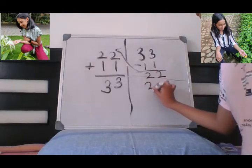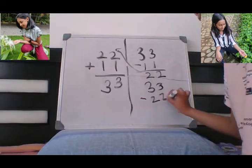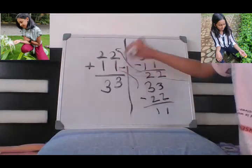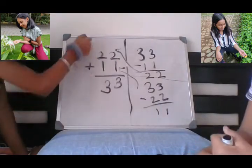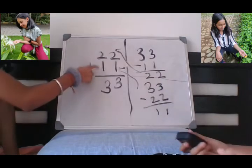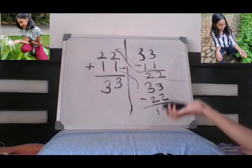Or you could do this one like 33 minus 22, which is going to be 11, and it comes over here. So you can do either things, but you have to do this minus one of these numbers. It's your choice. If you do this minus this, it has to come this. If you do this minus this, it has to come this. That's the verification one.